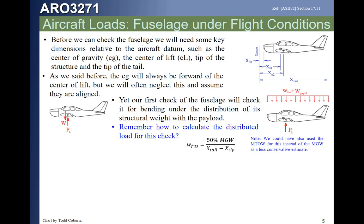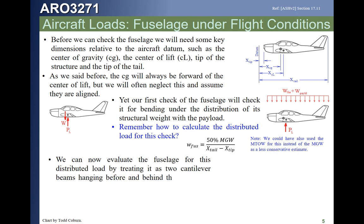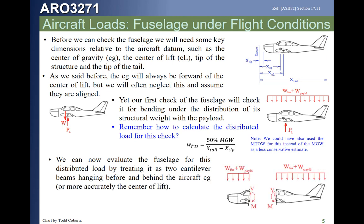We can evaluate this as two cantilever beams — one forward of the center of lift and one aft of the center of lift. Splitting the fuselage there, we take the two distributions of load. The problem is this distribution of load gives a different CG than what is really on the aircraft, so we tweak this on the next slide to get a better distribution such that our assumption matches the same CG as the real structure.